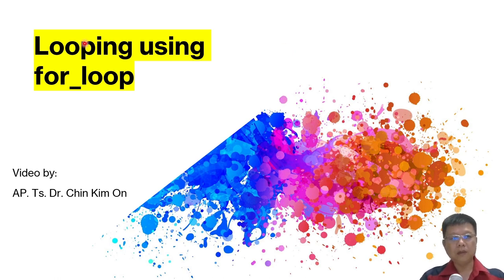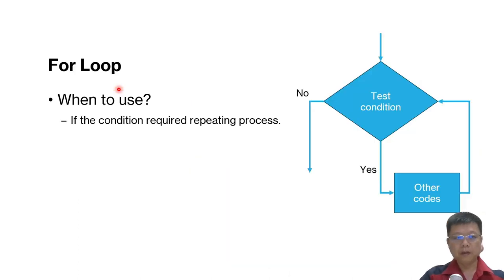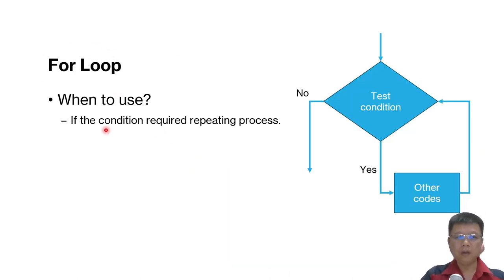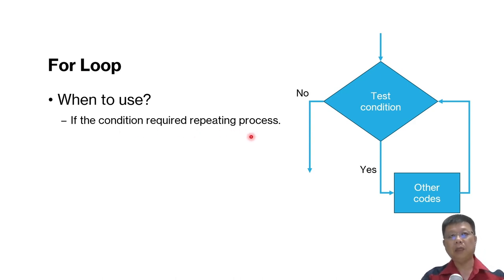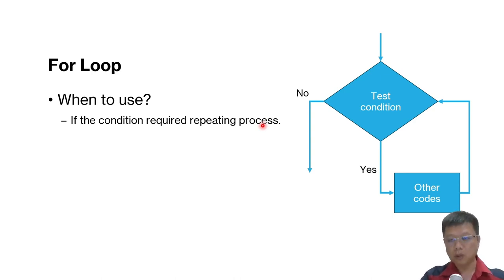In this video we are going to learn about looping using for loops. We use for loops when the conditions require a repeating process — meaning when the questions or programs require repetition. We will go for a for loop especially if we know when to start and when to stop.